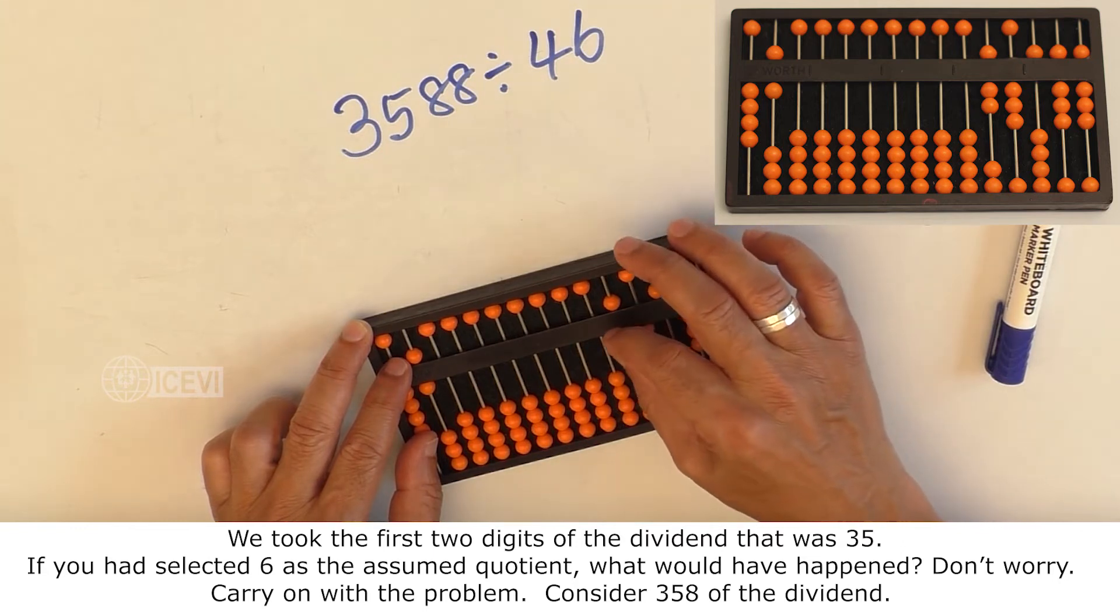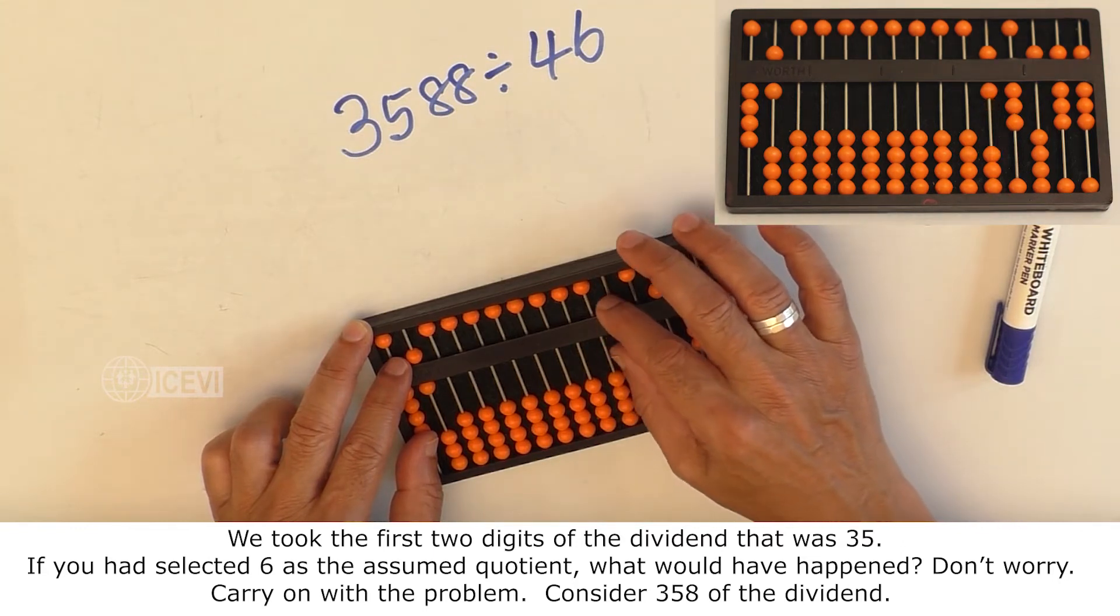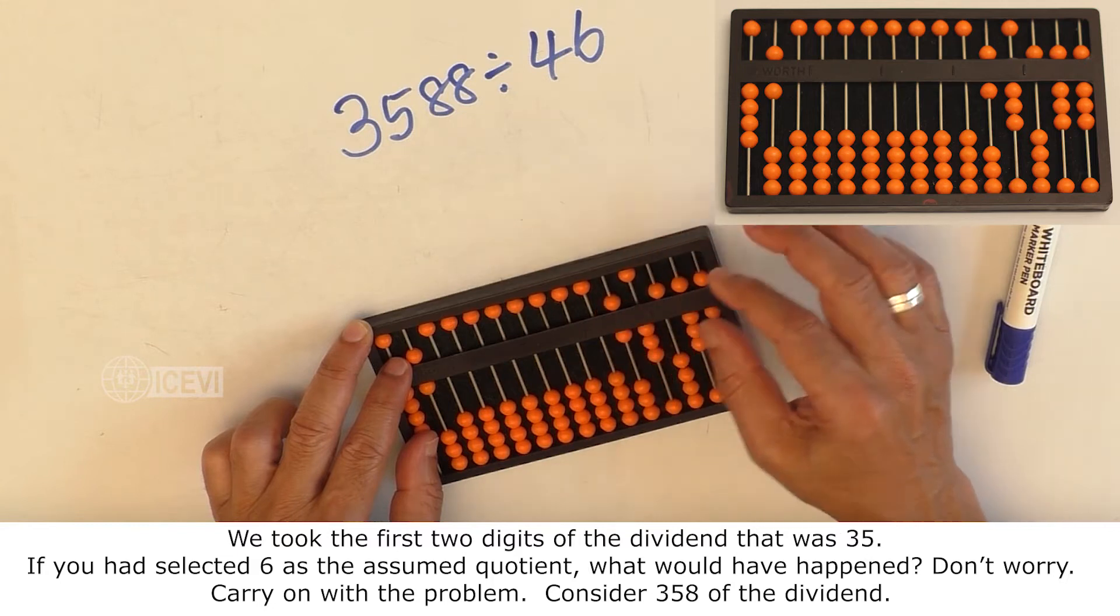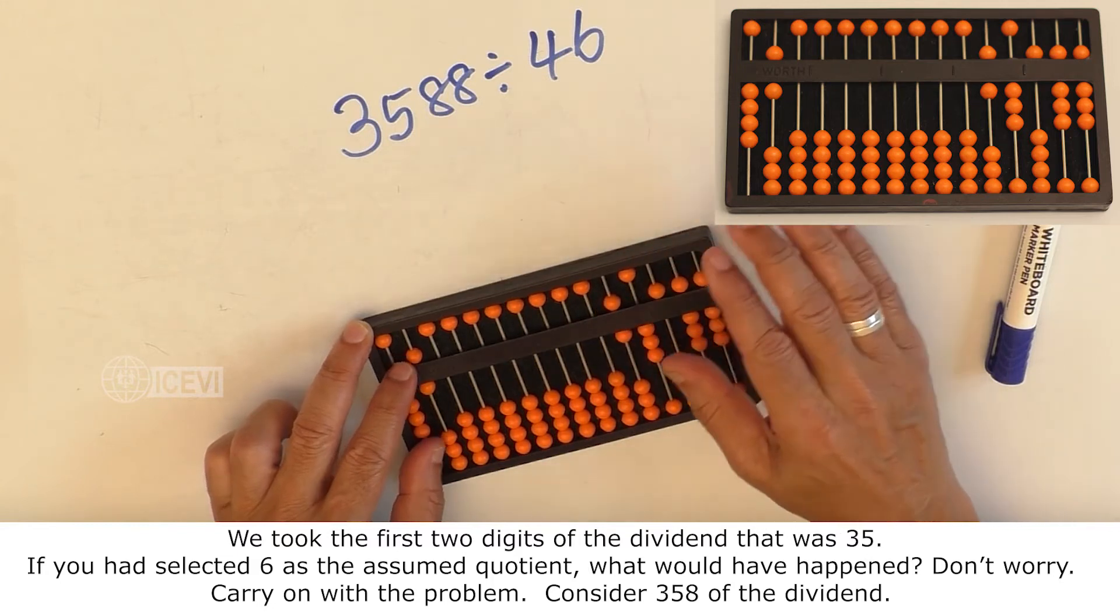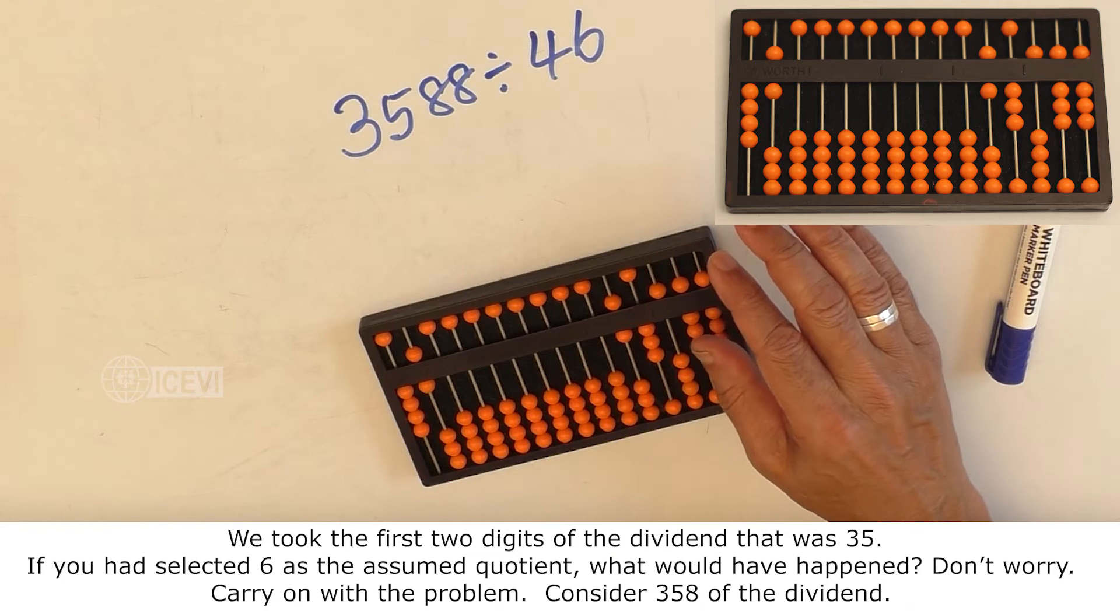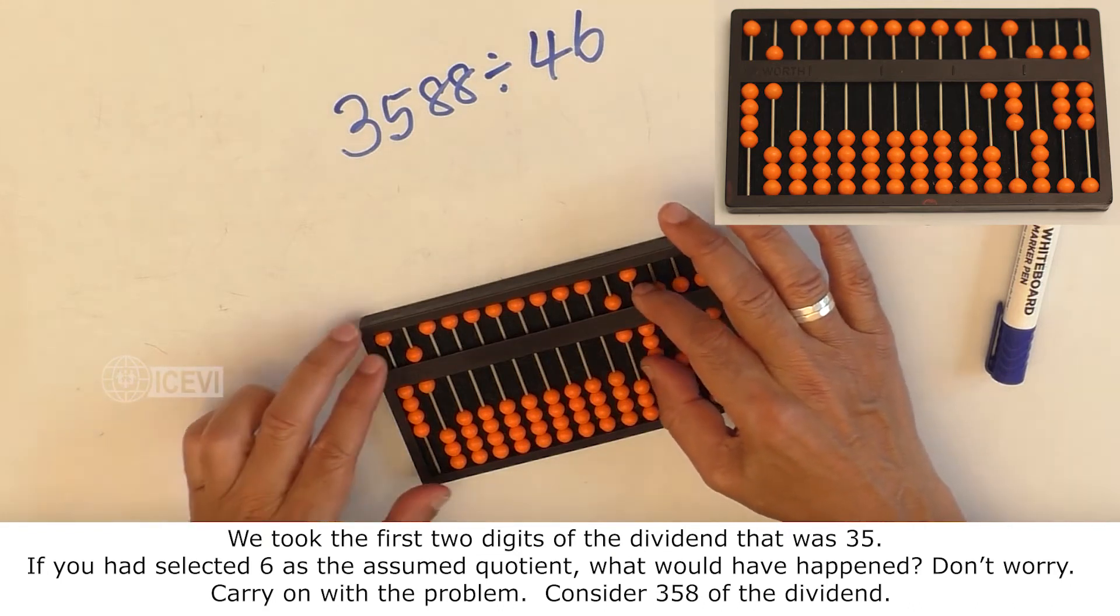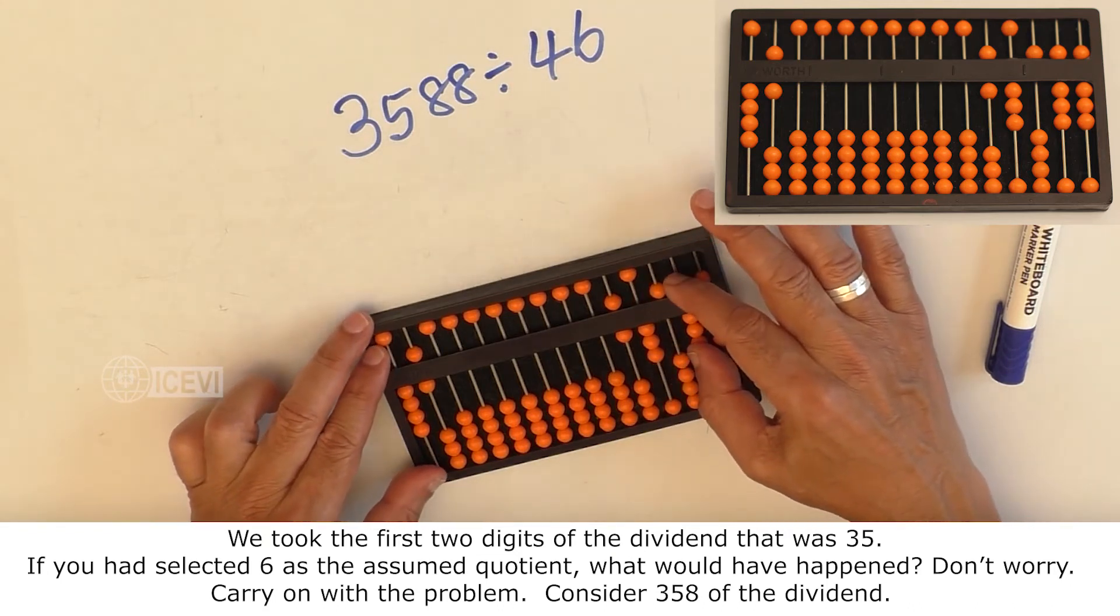If you had selected 6 as the assumed quotient, what would have happened? Don't worry, carry on with the problem. Consider 3, 5, 8 of the dividend.